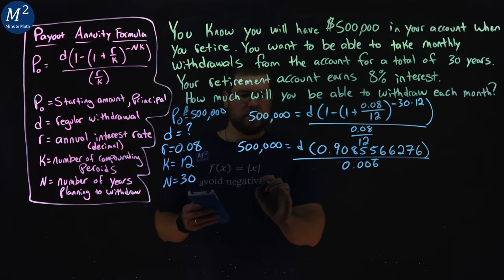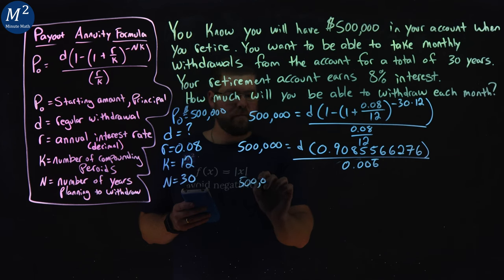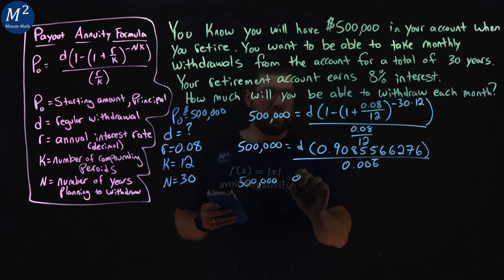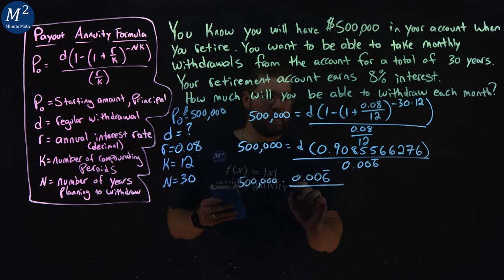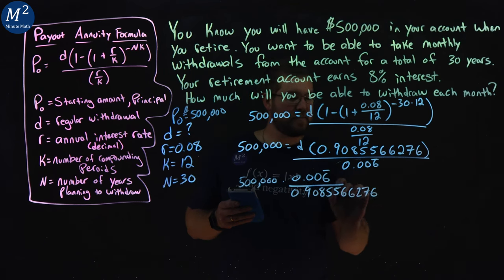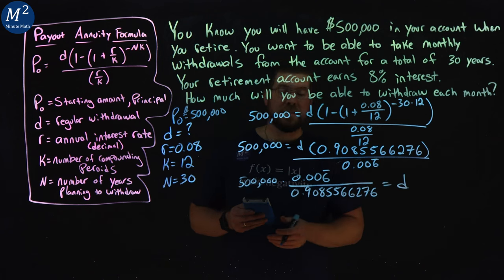So, it's a fraction here, so we can say 500,000 times, flip the fraction when we multiply it, 0.006 repeating over this large decimal, 0.9085566276, is going to be equal to our D value.